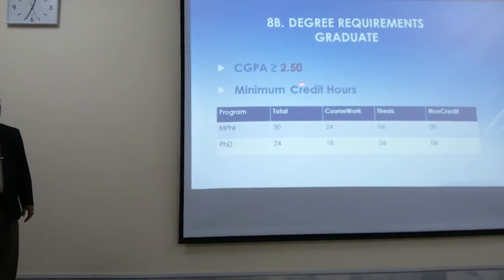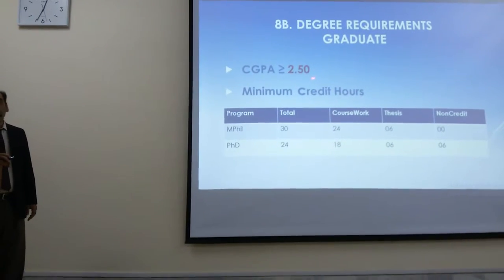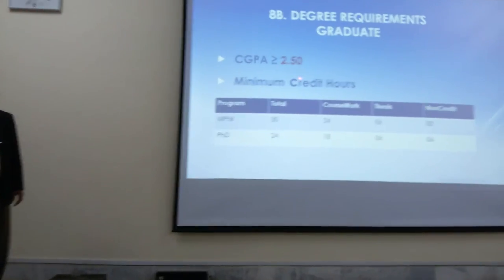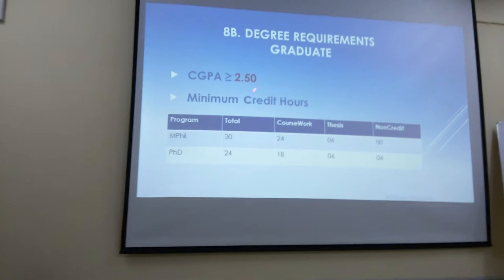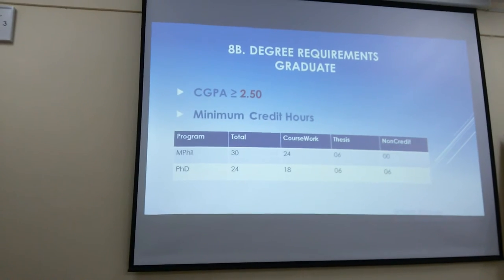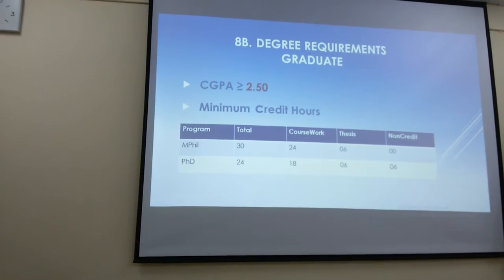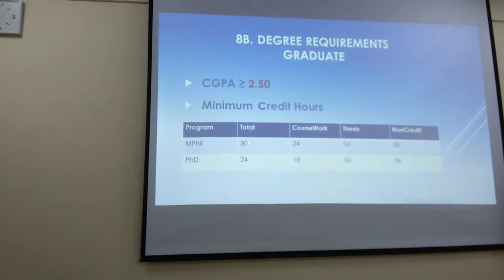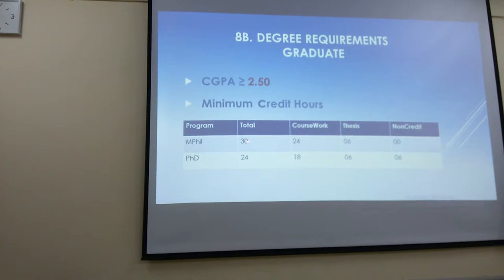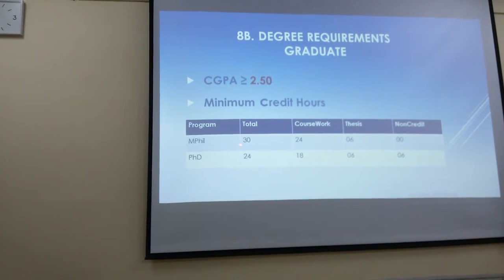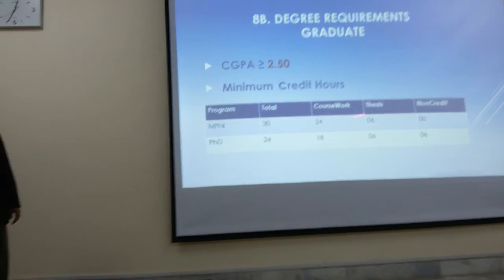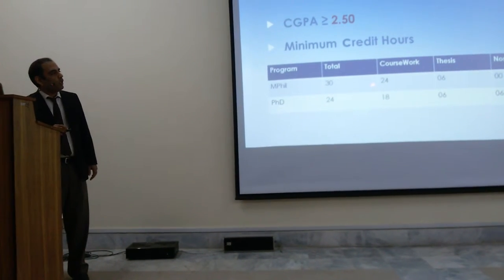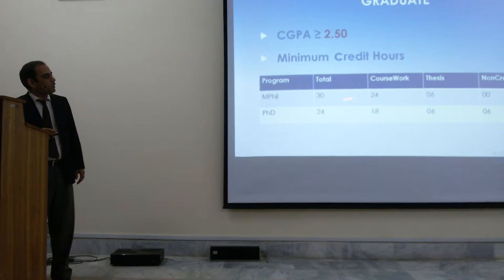This is something different and this is for MPhil. For MPhil, we have a minimum CGPA of 2.5. If it is less than 2.5, the degree will not be allowed. For MPhil, we have total credit hours of 30: 6 of them for thesis, 24 is the coursework, and non-credit is 0.